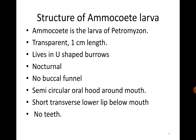When Ammocoetes larvae first hatch, they are about 7 mm in length and stay in the nest. Once they grow to about 15 mm in length, they quit the nest and burrow in mud and sand in quiet water. Each larva constructs and inhabits a V- or U-shaped tunnel. The larval period lasts from 3 to 7 years depending on species, during which they grow up to 170 mm and become opaque — whereas when they hatched they were transparent.